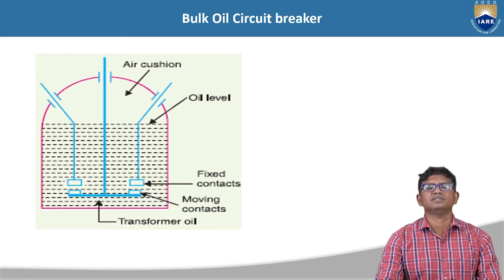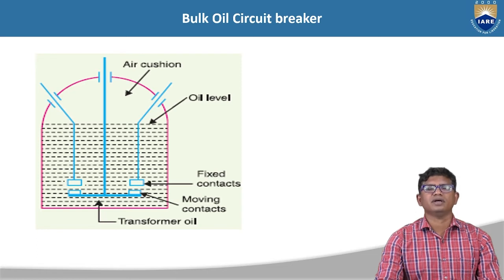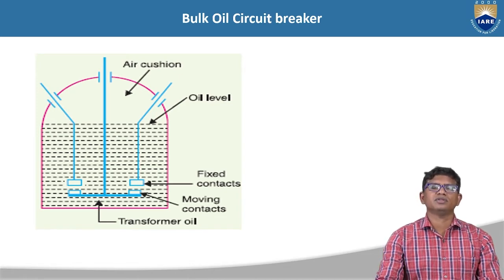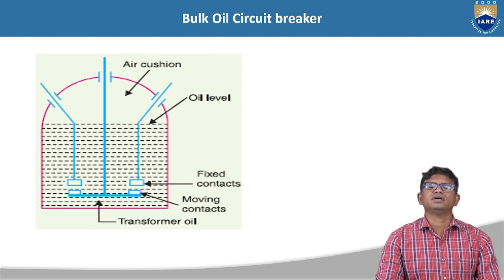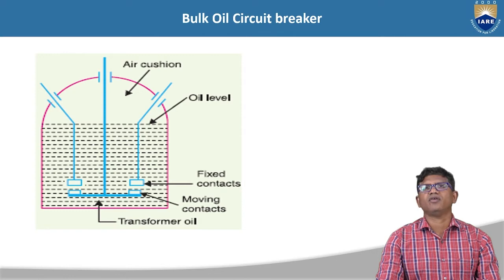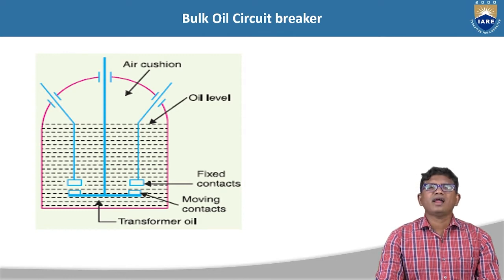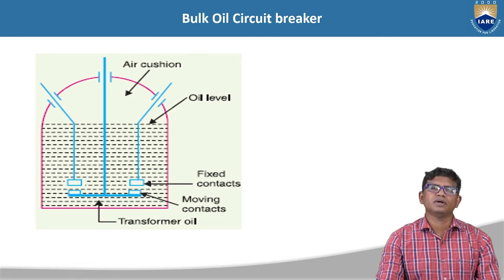During operation of the oil circuit breaker, the oil is vaporized using heat energy. The vaporized oil consists of gases, mainly hydrogen gas, which has high thermal conductivity and cools the arc. Under normal operating conditions, the fixed contact and moving contact are completely closed.